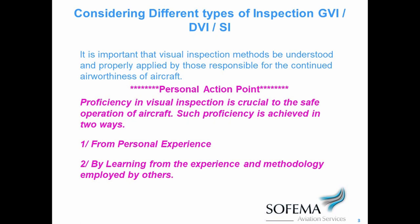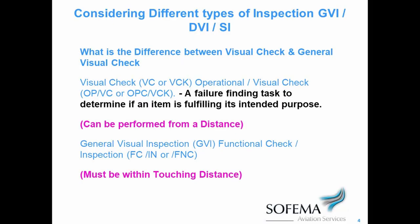A visual check is a failure-finding task to determine if an item is fulfilling its intended purpose — it can be performed from a distance. Conversely, a general visual inspection must be performed from within touching distance.